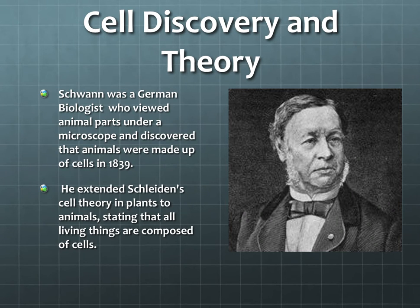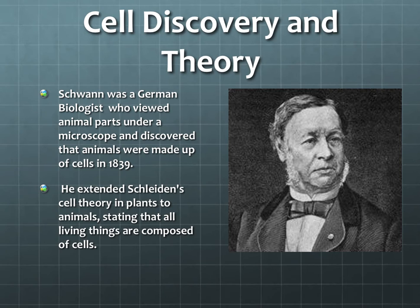Now the next man, his name was Theodor Schwann and he was a German biologist. What he was doing is he was looking at animal cells underneath the microscope in 1839. So he is the second part of the cell theory, which extended Schleiden's theory in plants. His contribution was that all animals are made of cells.